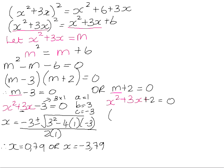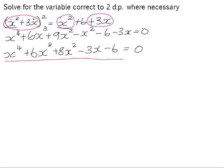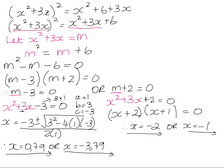On the right-hand side, the expression x squared plus 3x plus 2 does factorize — pause and try it. That gives us x plus 2 and x plus 1, so x equals negative 2 or x equals negative 1. So this equation actually has four solutions. Going back, that makes sense because the highest degree on the polynomial is x to the power of 4, so we'd expect a maximum of four solutions — and here we have all four.